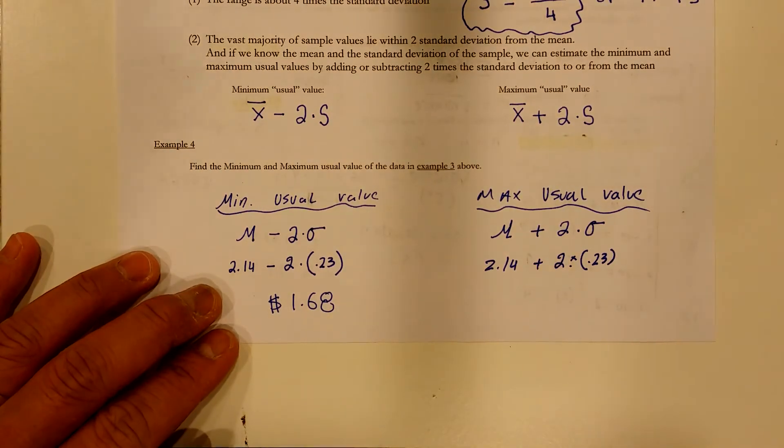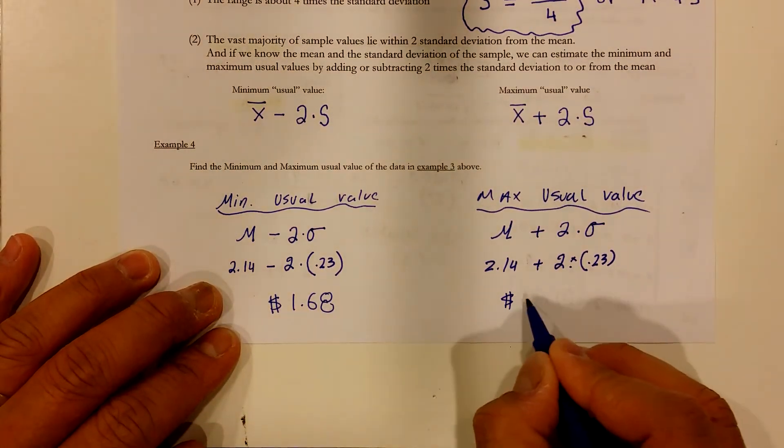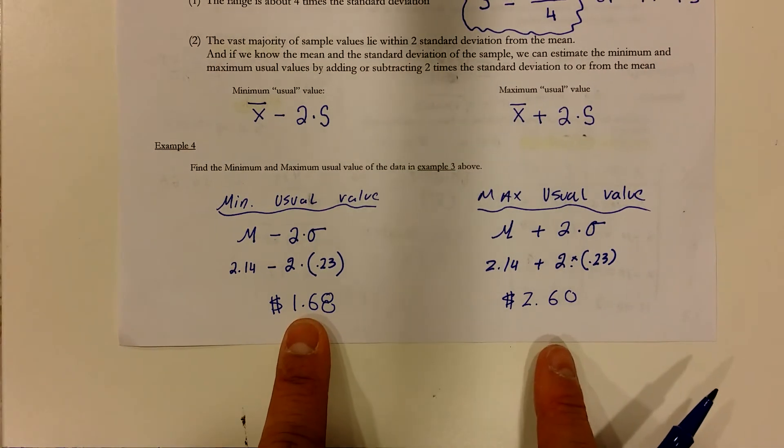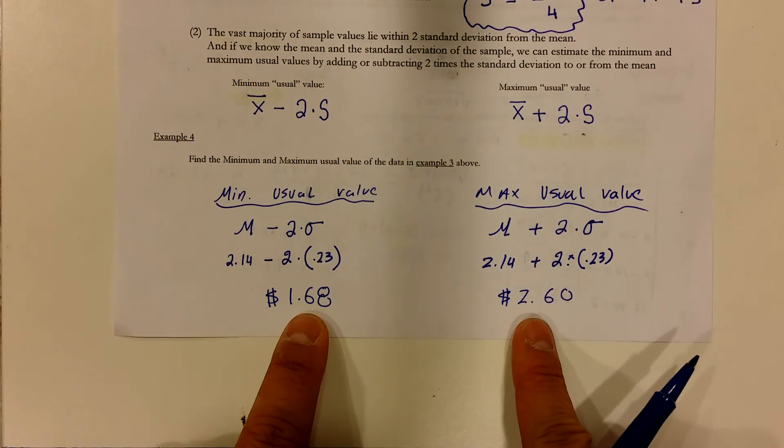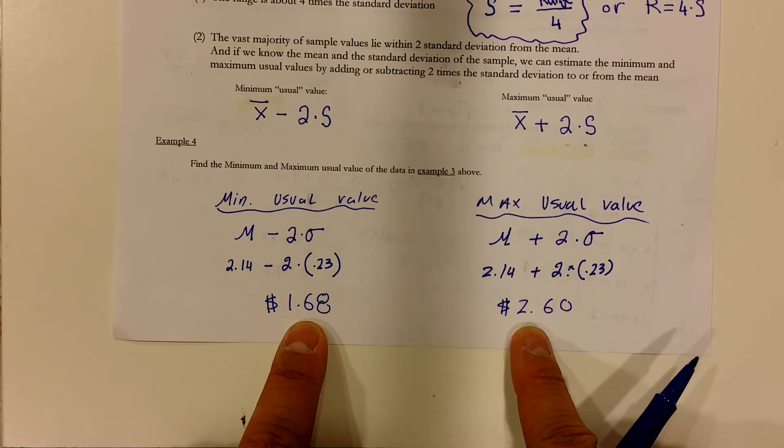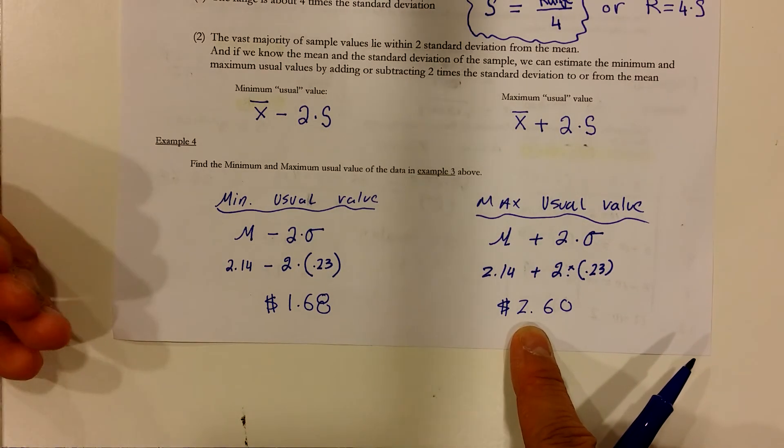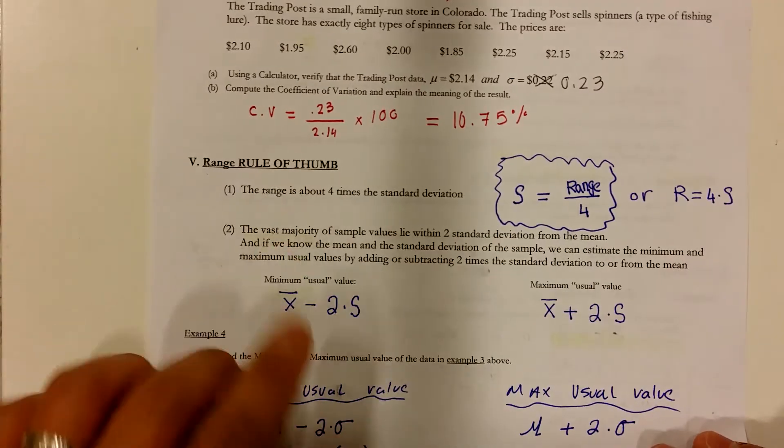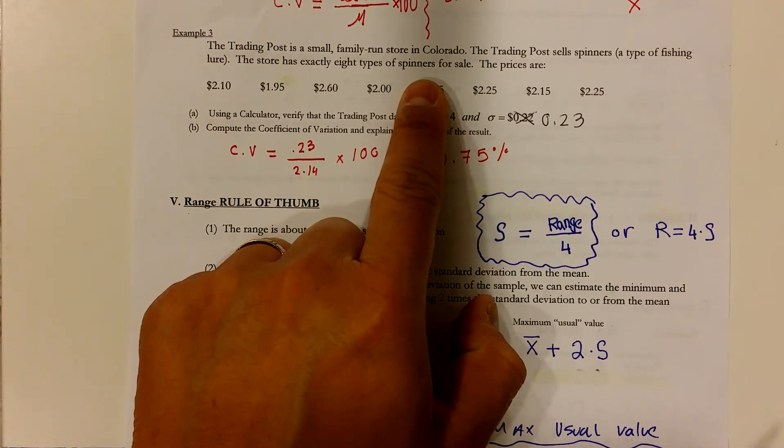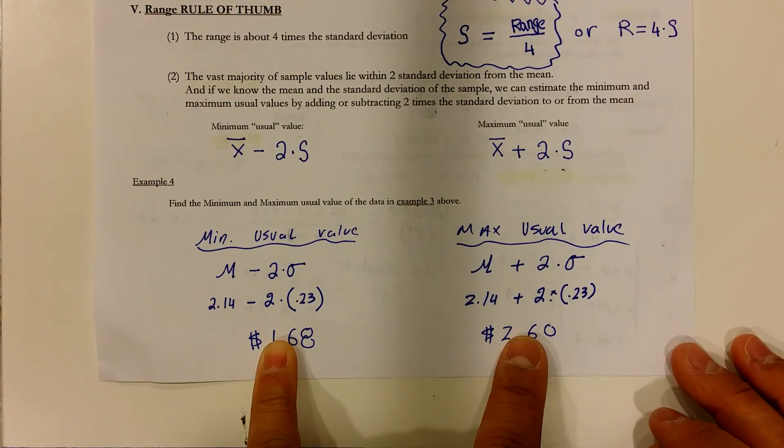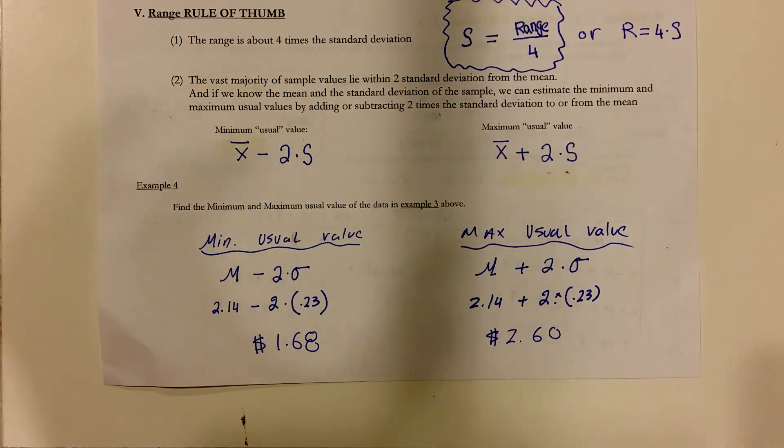So, $2.60. The smallest number that's acceptable is $1.68. The largest number that's acceptable is $2.60. What does this mean you might wonder? Well, what this means is if you were to walk into the store and purchase one of the spinners and paid between these prices, then you did not get ripped off. That's what it means because it's okay. There's a variation in the price.